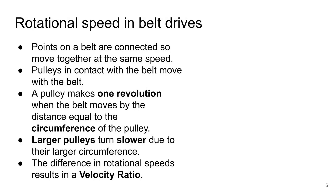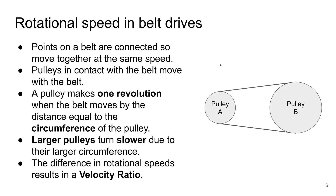We are now going to look at rotational speed in belt drives. The points on a belt are connected so they move together at the same speed, and the pulleys in contact with the belt move with the belt. A pulley makes one revolution when the belt moves by the distance equal to the circumference of the pulley. A larger pulley turns slower because it has a larger circumference, and this difference in rotational speed between the pulleys results in a velocity ratio.